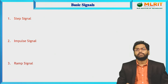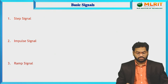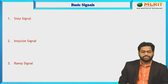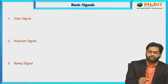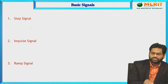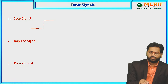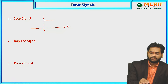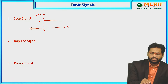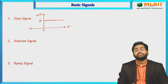Looking at the basic signals, there are around 10 signals. The first one is the step signal — the same example we have been discussing. Step means it looks like a single staircase step, starting from 0 with a continuous amplitude. The signal is named u(t) and its amplitude is 'a'.